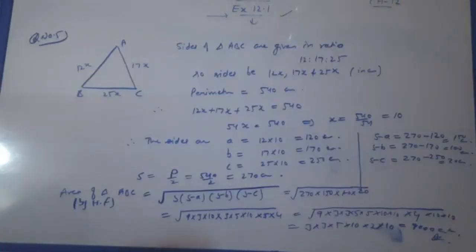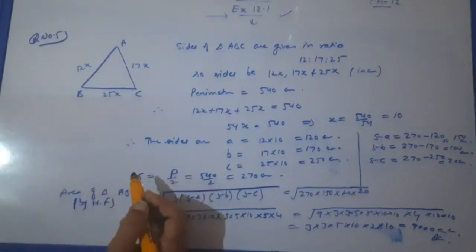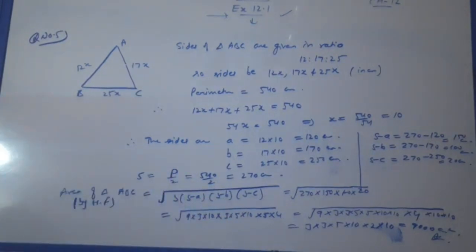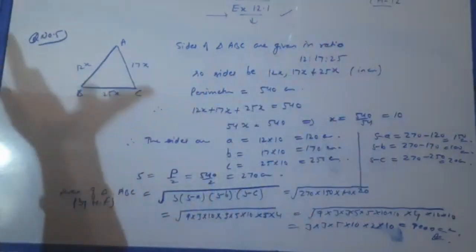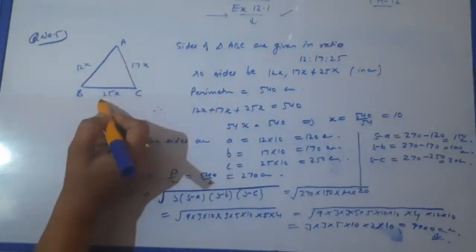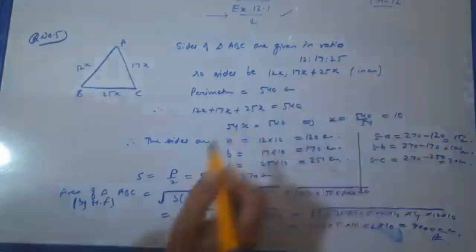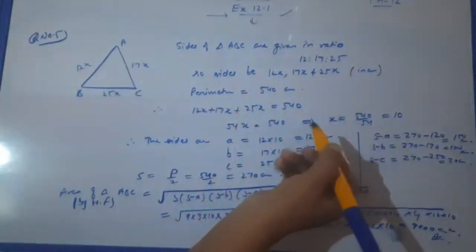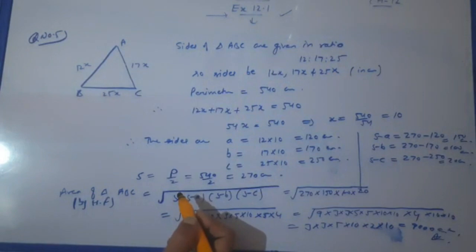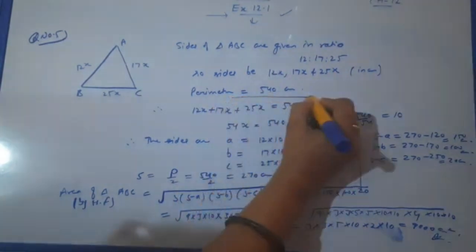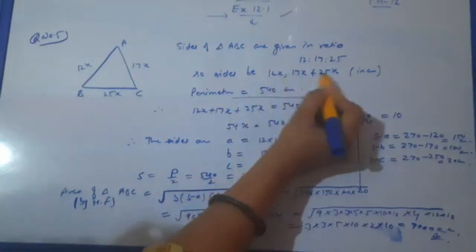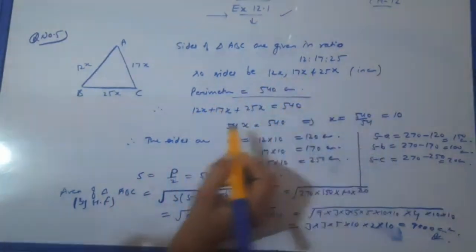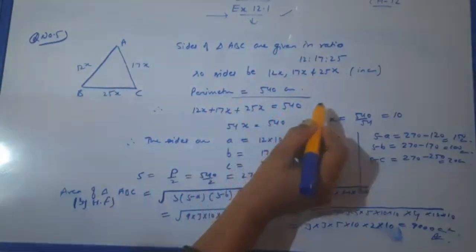Yes 9th class, now let us see question number 5 of exercise 12.1. What is asked in this question? Sides of the triangle are in the ratio 12 is to 17 is to 25, and that is equal to 12x, 17x, and 25x. Whenever ratio is given, take one constant with it. You can take K, you can take X. Now, the perimeter is also given to us, that is 540. And he is asking us to find out the area of the triangle.